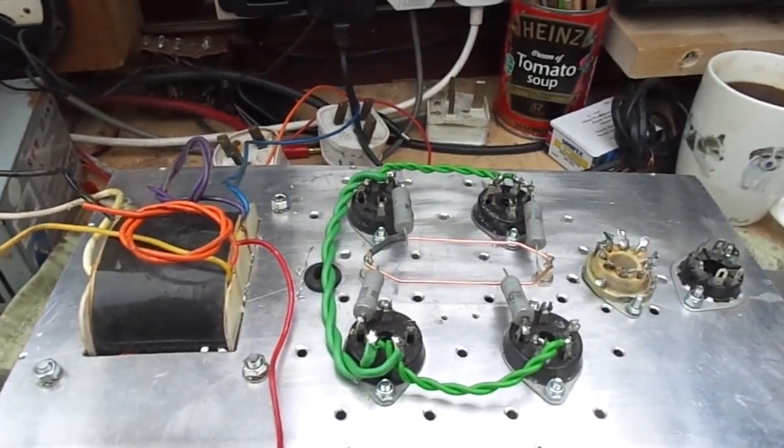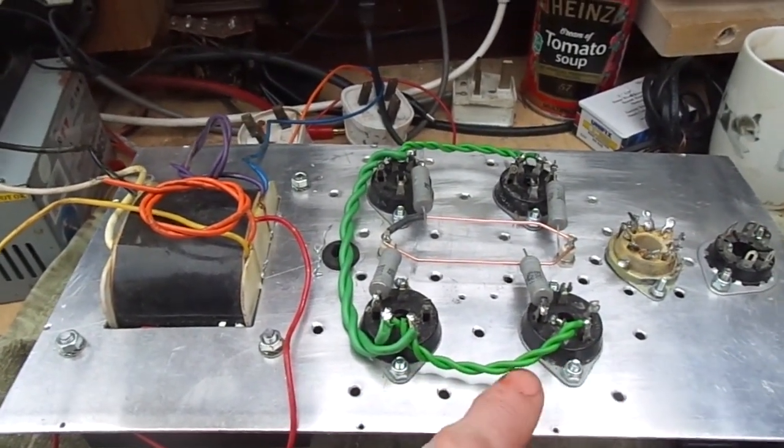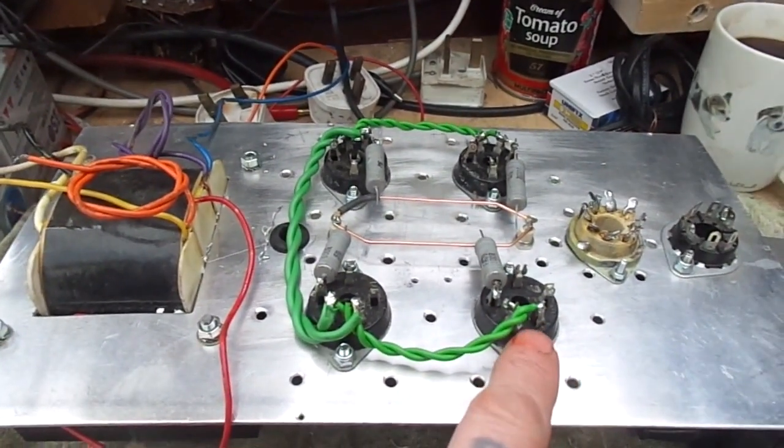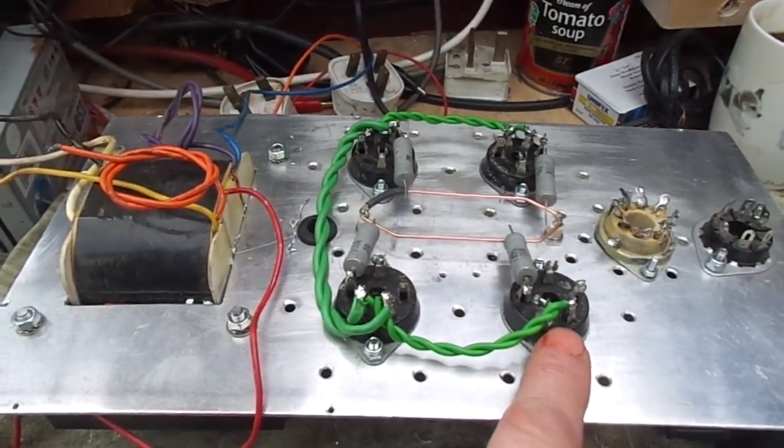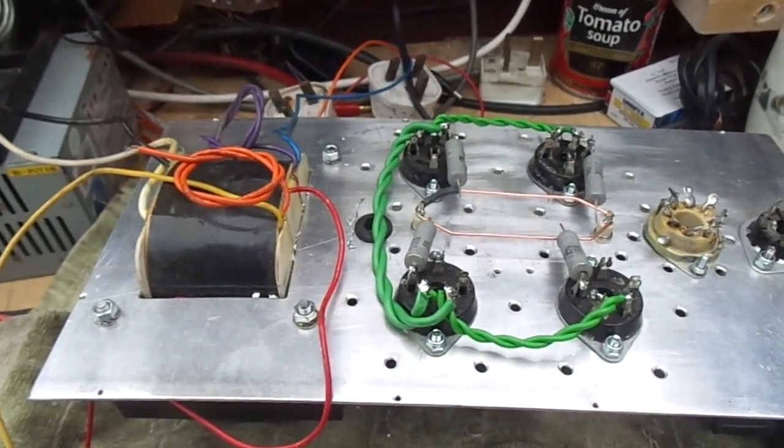As you can see we've got the heater wiring in. Thin wire going to this one here and there. It's only got to provide 900mA. And a big thick one here to provide these two and that one.